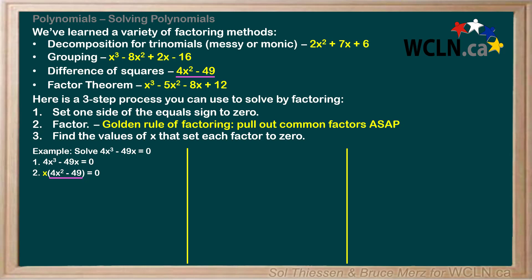Now we have ourselves the same difference of squares we used as an example above. Remember, to factor a difference of squares, we take the square roots of the first term and the second term, which are 2x and 7 respectively. Then we rewrite the difference of squares as the product of the sum of the square roots and the difference of the square roots, like so. The left-hand side of the equal sign is now fully factored, so we can move on to step 3.